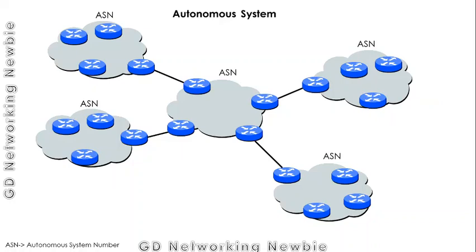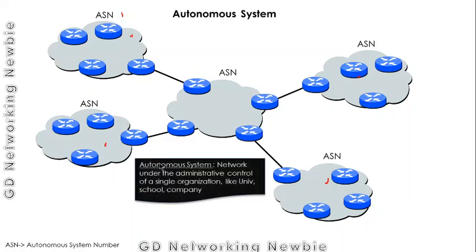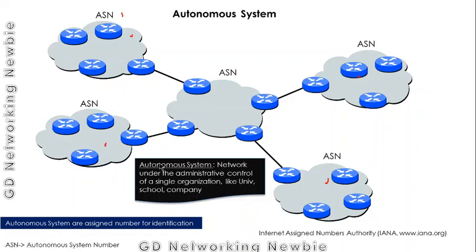These different areas are actually different autonomous systems, which really exist. Each autonomous system has an associated autonomous system number. An autonomous system can be defined as a network under the administrative control of a single organization or administrator — for example, a university, a company, or a school can each have their own autonomous system.